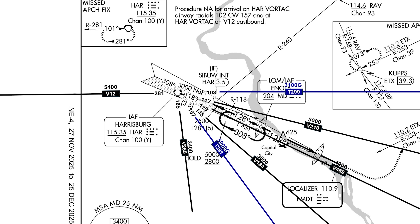This means that in addition to T299, Victor 210, Victor 469, Victor 184, and T291 are all not authorized, because they fall in that slice of area between those two radials. Why can't we use these? It has to do with obstacle protection.